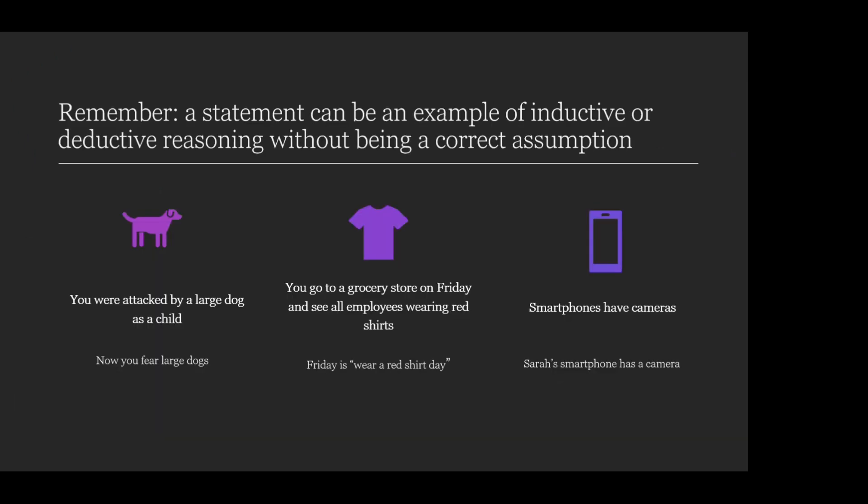It's important to note that with all of these situations, any of them could be an example of inductive or deductive reasoning even if it's not a correct assumption. Not all of the examples are necessarily true. For instance, being attacked by a large dog as a child leading you to induce that large dogs are scary — we may say logically that isn't always the case, but it is still a valid statement of inductive reasoning. Going to the grocery store and seeing employees in red shirts determining that Friday is wear-a-red-shirt day may not in fact be the case — they may be wearing red shirts for some other reason.